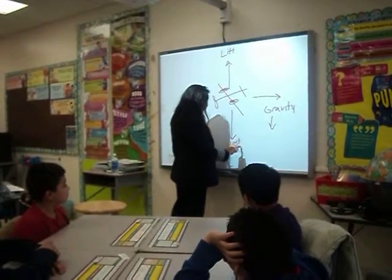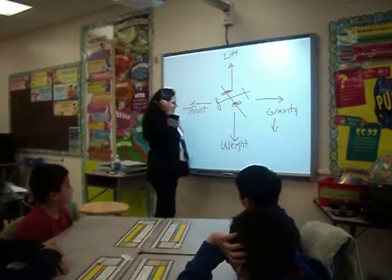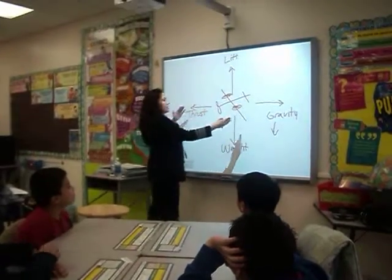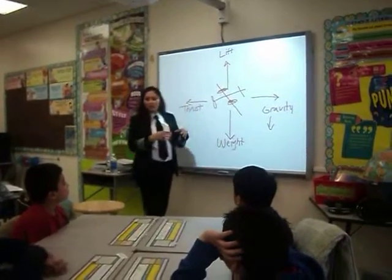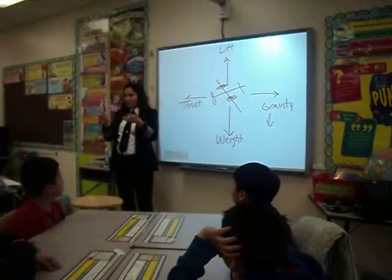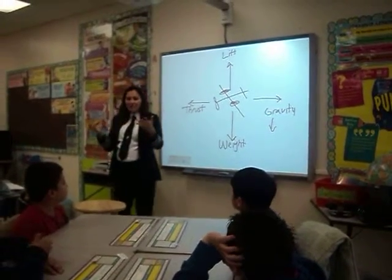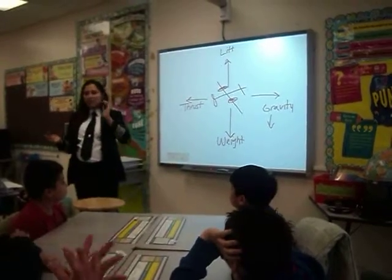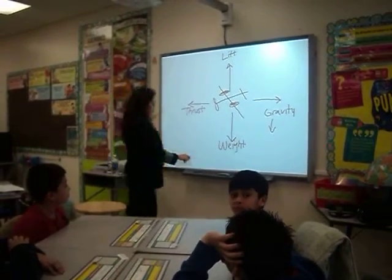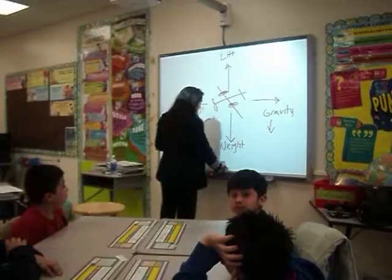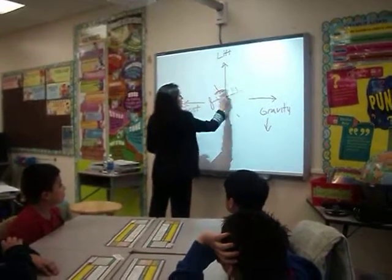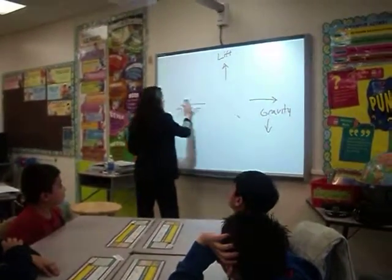Now, the way this works is that once you counteract all these and make all these equal, the airplane is able to stay in the air. But that doesn't mean how the airplane flies — that just means everything is all equal. So let's talk real quick about how you make it fly. How does the wing fly?